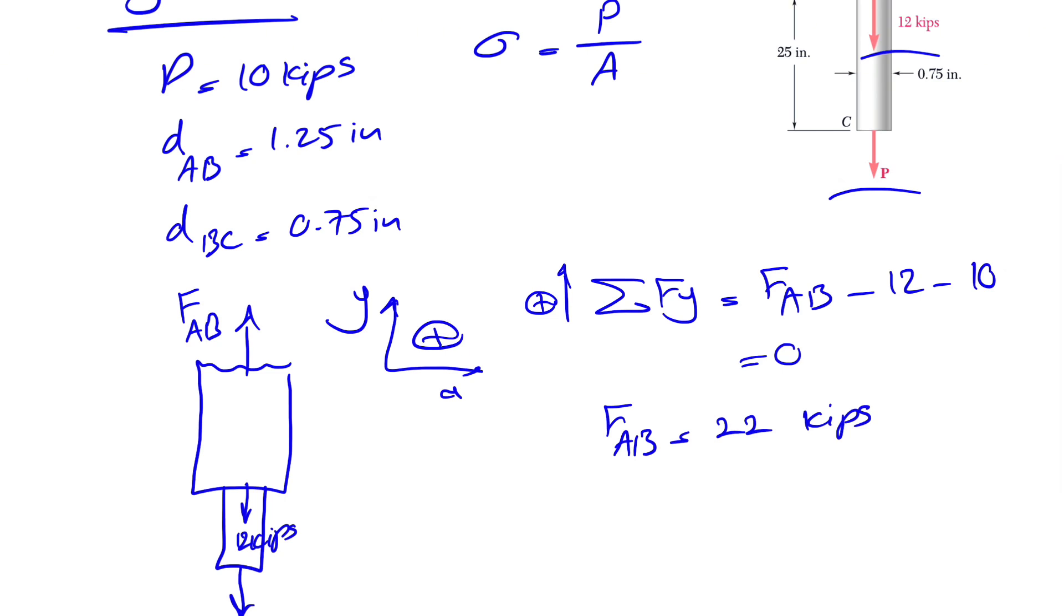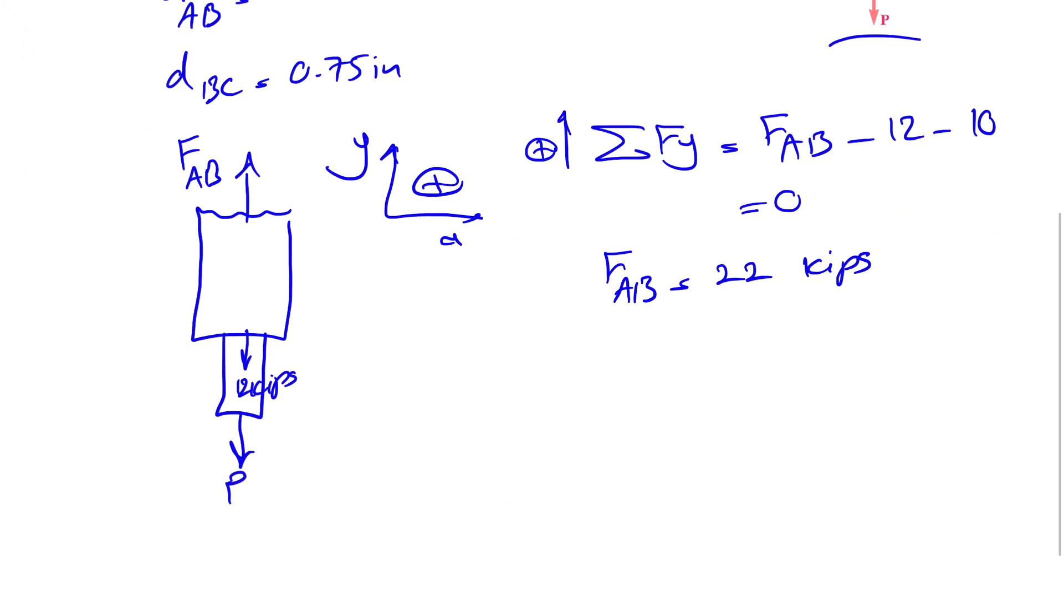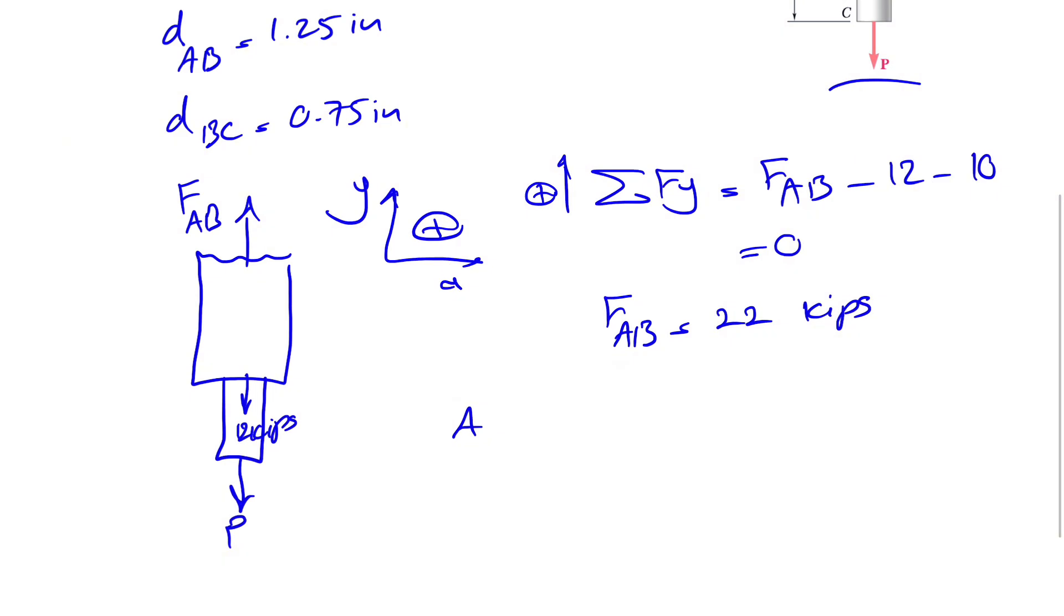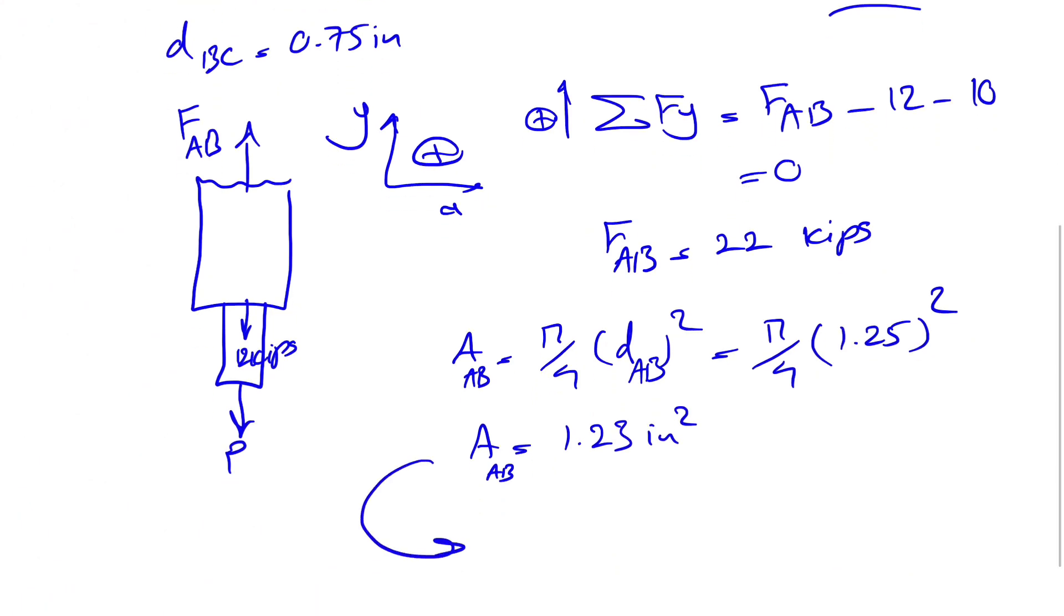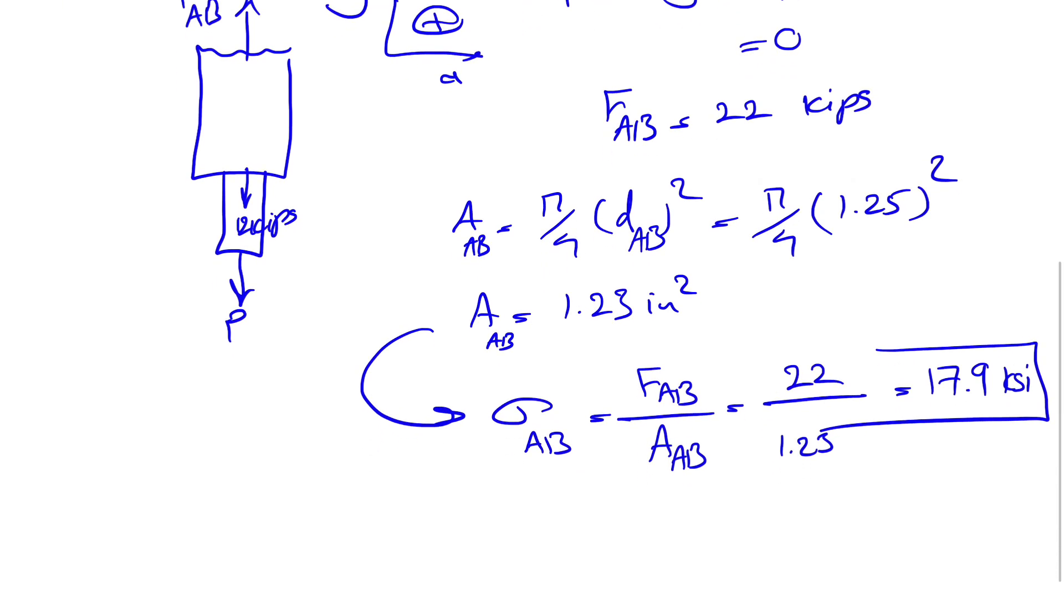So now we have the force that we were looking for and let's just find the area too and if you find the area, we're good to go to find the average normal stress. So our A would be pi divided by 4 times the AB squared. So we have pi divided by 4 times and D we know is 1.25 squared and if we find the area of AB, we get 1.23 inches squared and from here we can find the average stress of AB which will be F_AB divided by A_AB. So this will be 22 divided by 1.23 which will be 17.9 KSI and for having the unit KSI, we need to have the force in Kips and the area in inches squared.